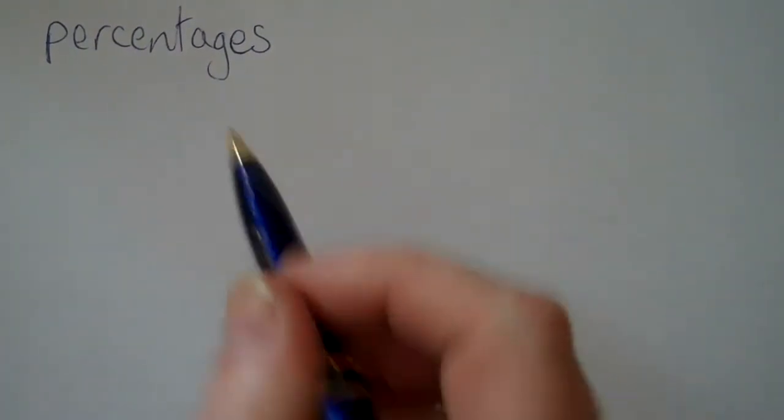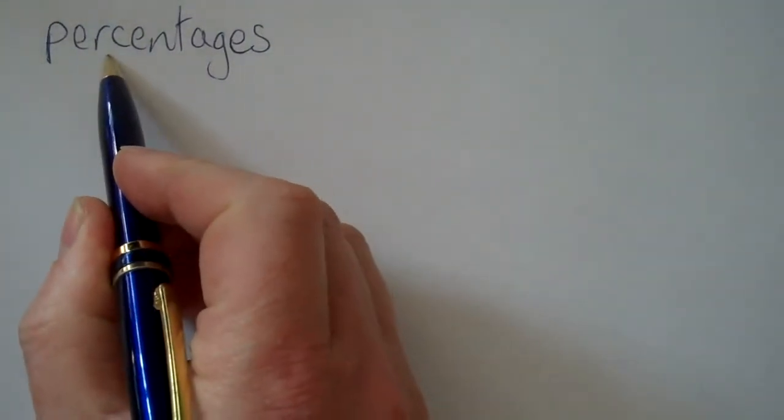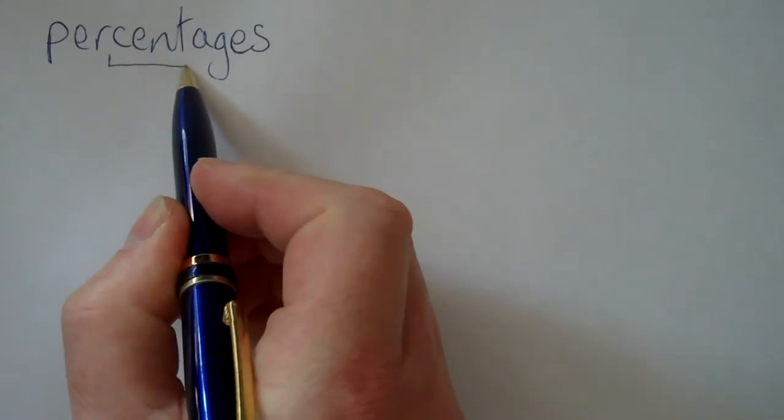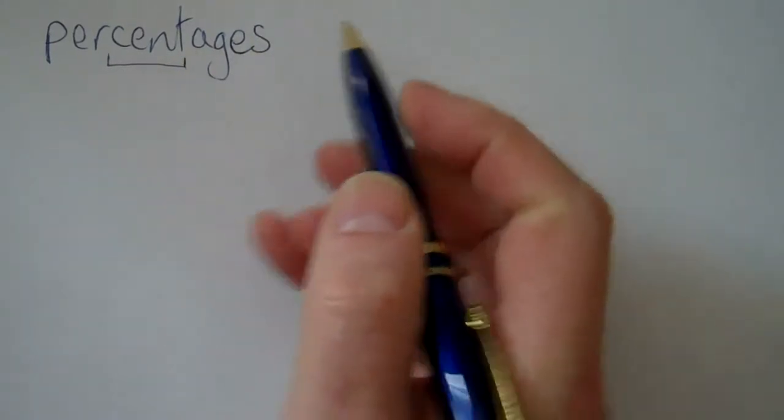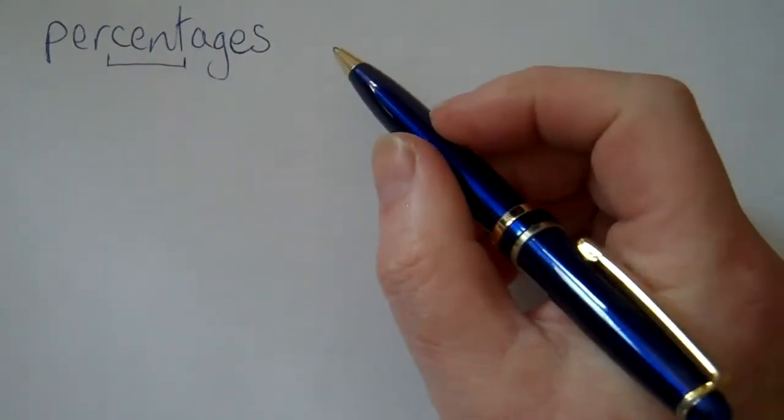OK, I'm going to remind you what we've said about percentages. Any word that has these four letters C E N T in the middle, cent, has usually got something to do with a hundred, hasn't it?